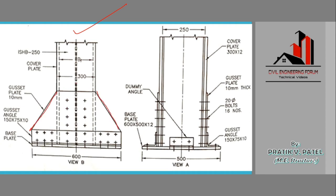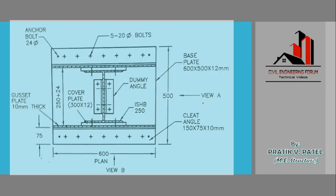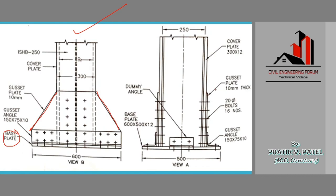This is the side view, and this is the base plate, similar to slab based foundation. In View B we are able to see the entire gazette plate, but in View A we cannot see the gazette plate entirely — just its thickness, which is shown here. The gazette plate is connected using gazette angles of 150 x 75 x 10 mm thickness.